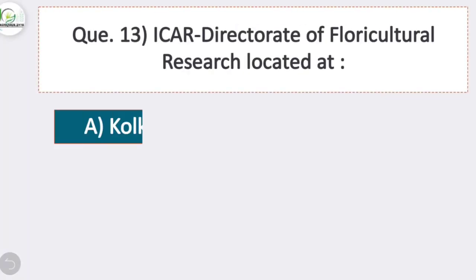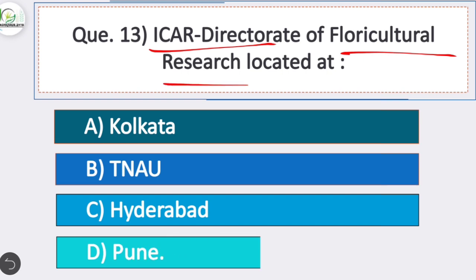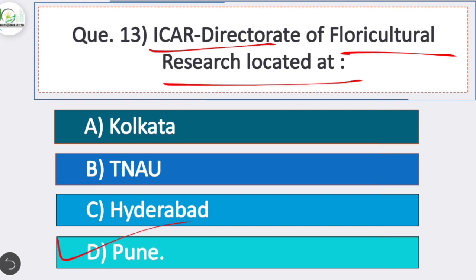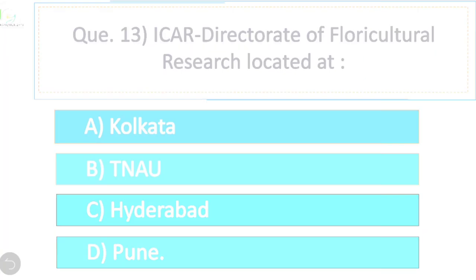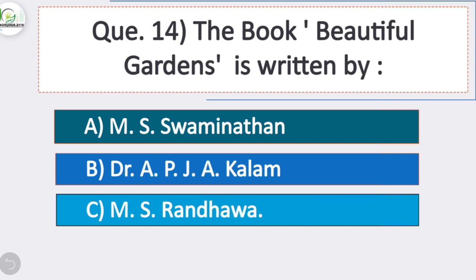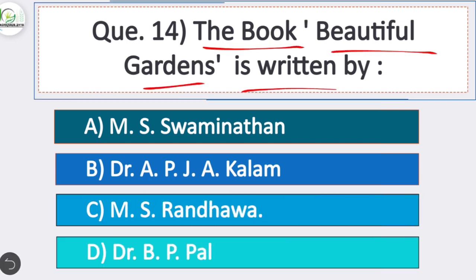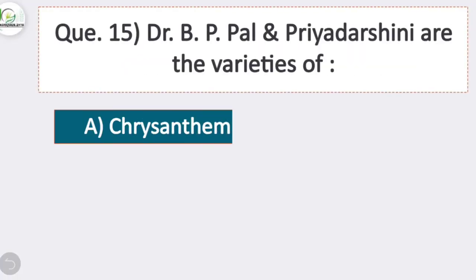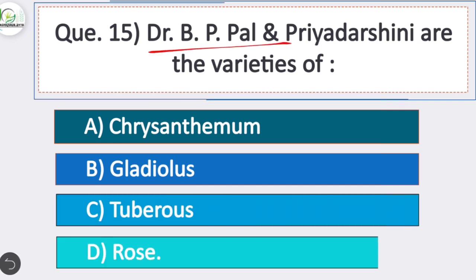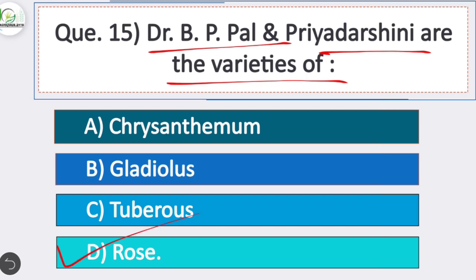Question 13: ICI Directorate of Floriculture Research is located at Pune. Question 14: The book 'Beautiful Gardens' is written by M.S. Randhawa. Question 15: Dr. B.P. Pal and Priyadarshini are the varieties of rose.